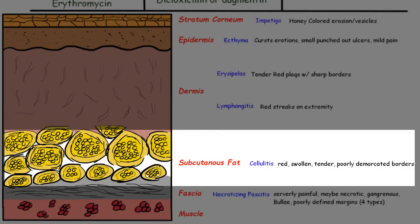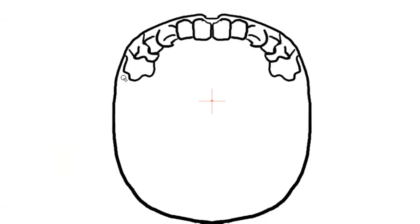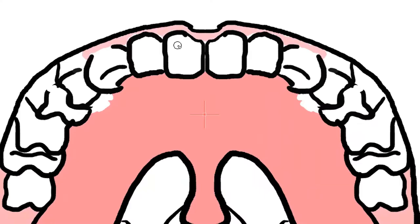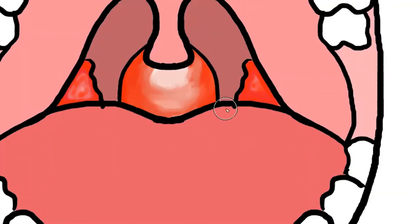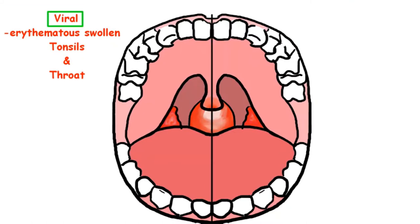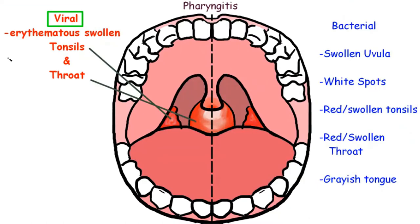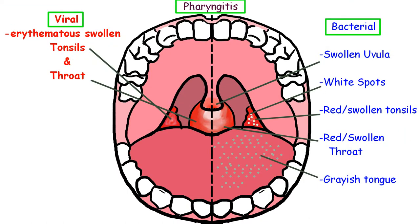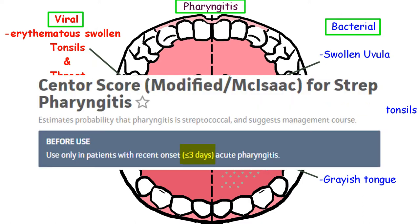GAS causes pharyngitis, aka strep throat, which if not treated can lead to devastating complications. Strep throat usually appears in kids, and we can use the Centor score, which estimates the probability that the pharyngitis is from a streptococcal organism. Remember you can only use this score in young patients who have had acute pharyngitis for at least three days.